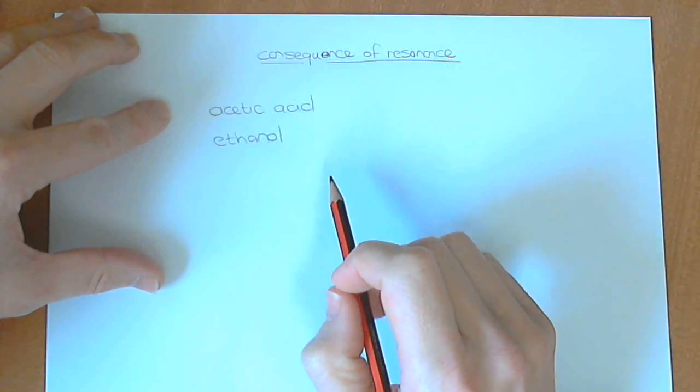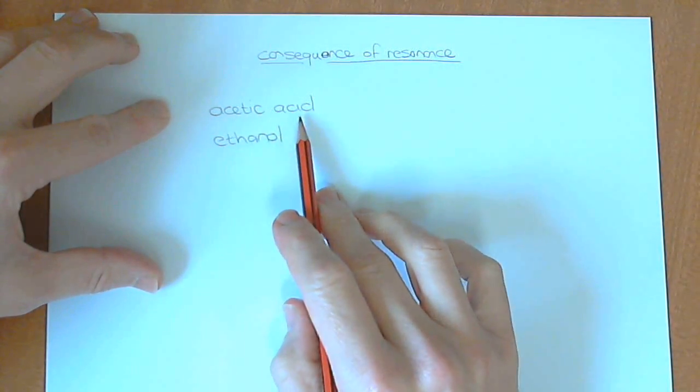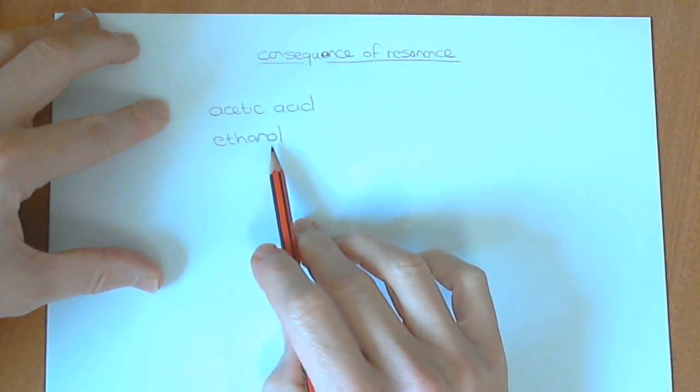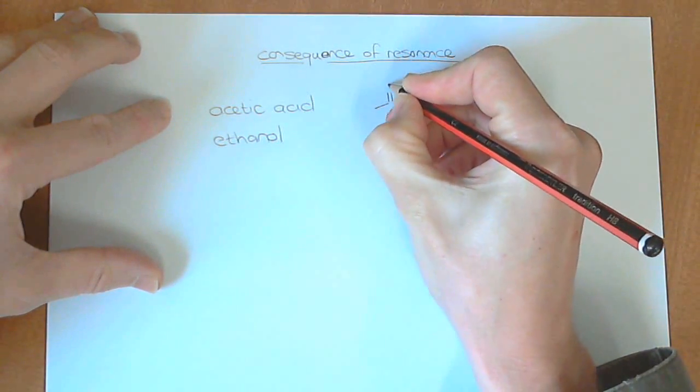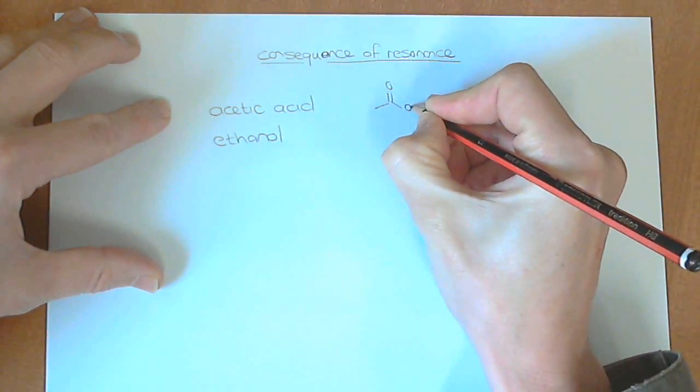A good example to actually illustrate this is to look at the difference between acetic acid and ethanol. If we draw out the line structures of that, and you should know how these compounds would look.